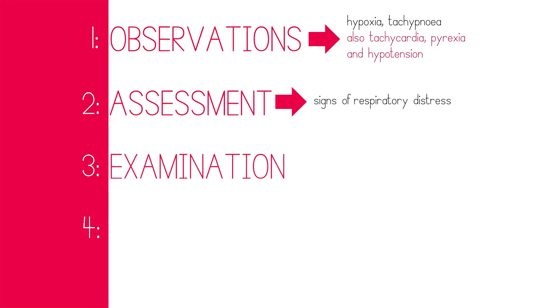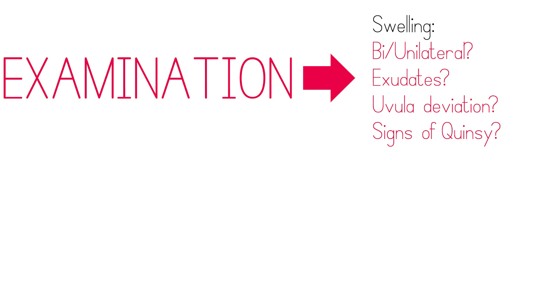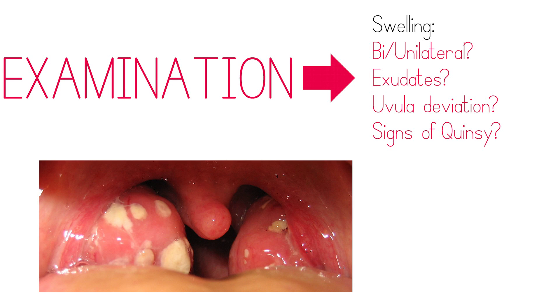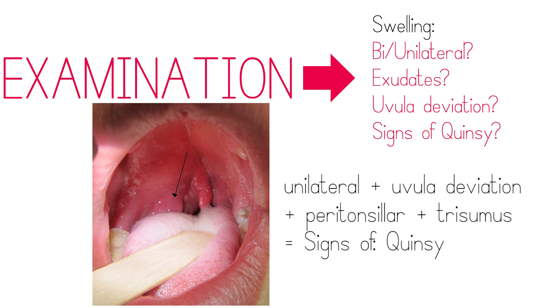Examination of the oropharynx: when inspecting the oropharynx, you're looking for swellings. Are they bilateral or unilateral? Does it look like a typical bilateral tonsillitis with exudates and enlarged tonsils? Or is the swelling more unilateral with uvular deviation? Is the swelling in the tonsillar tissue itself, or is it in the peritonsillar region, indicating a quinsy?